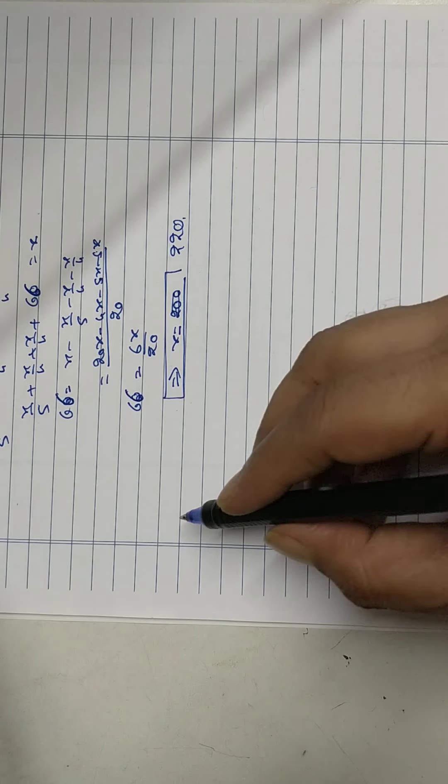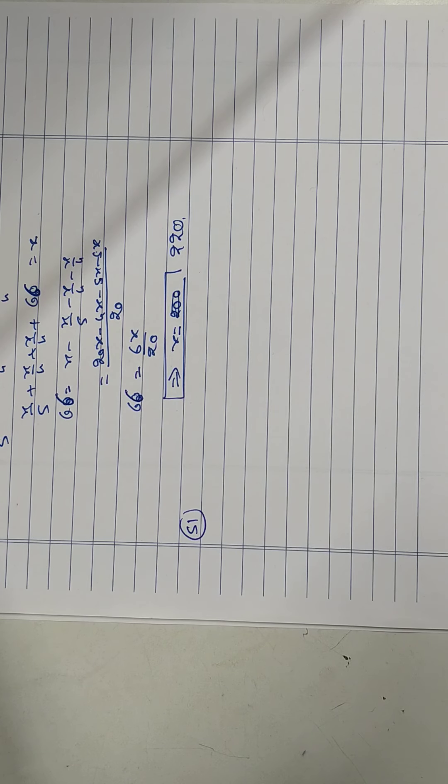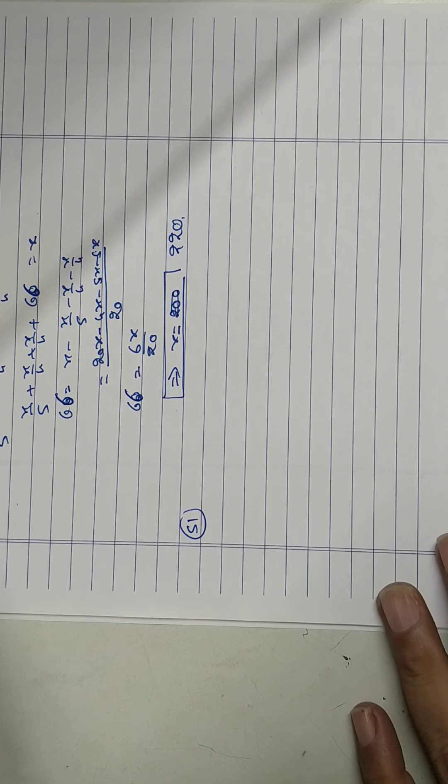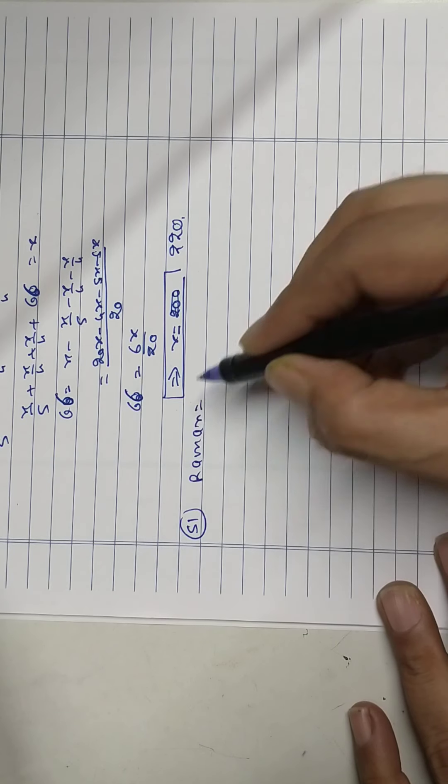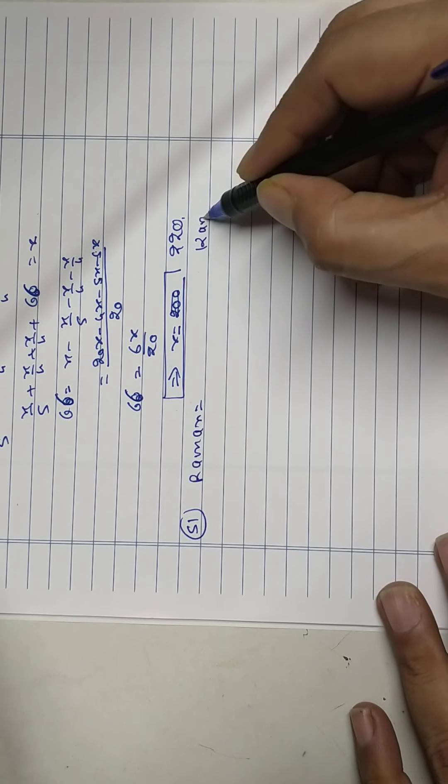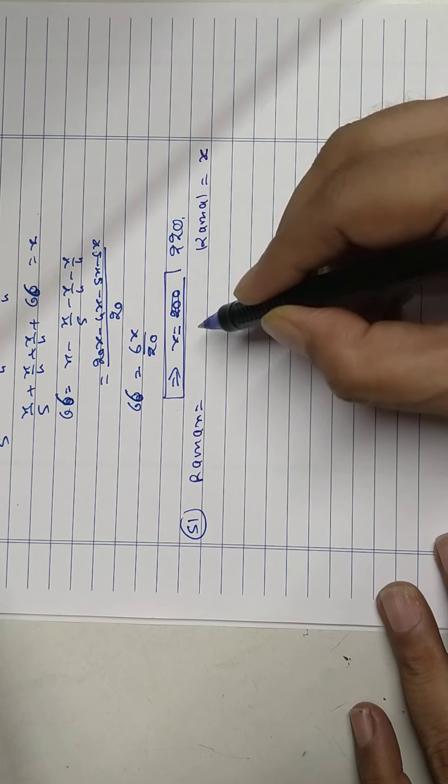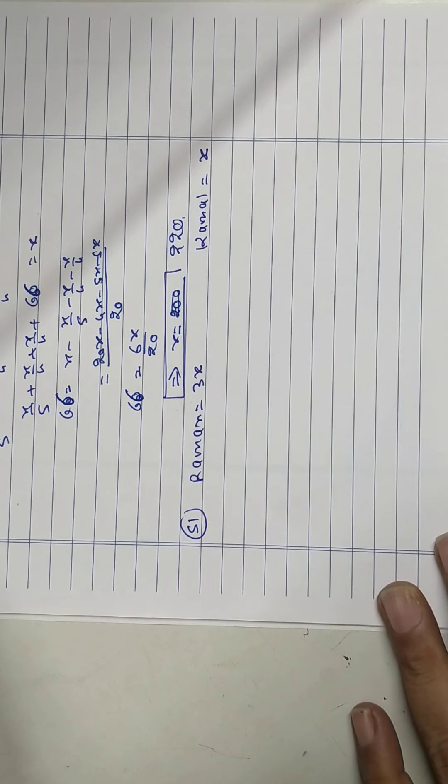Sum number 51. Raman has 3 times as many as Kamal. Raman, Kamal. Kamal has x, Raman 3x.